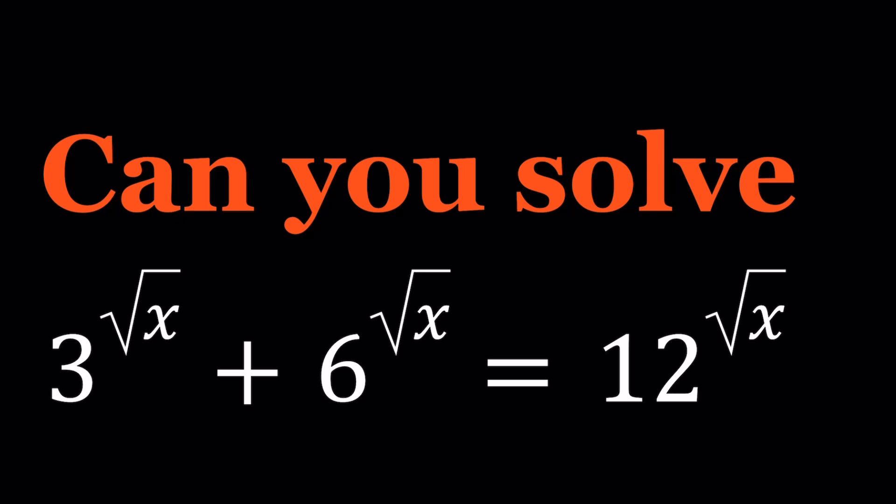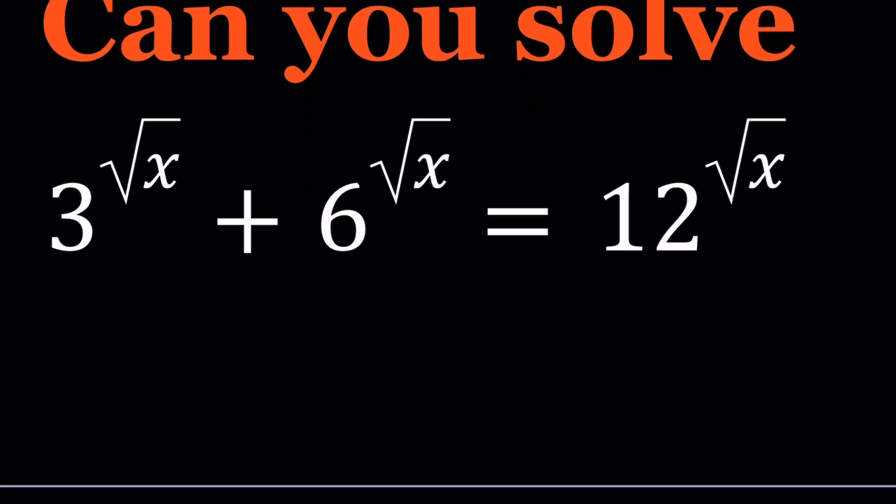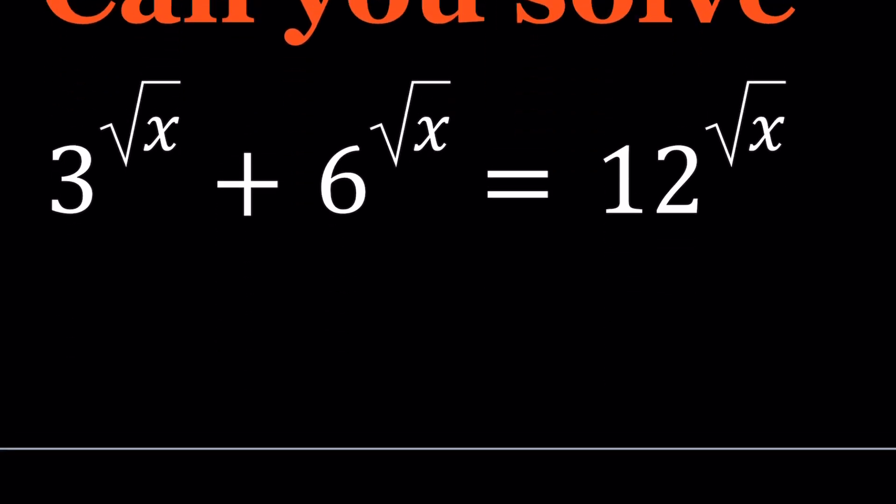So this is a non-standard equation because we have the same exponent but different bases and they're also being added together. But this is a special type of equation because 12 multiplied by 3 is equal to 36 which is 6 squared. So when I take two of the bases and multiply together that gives me the third base squared. Whenever you have a situation like this you got a good solution.